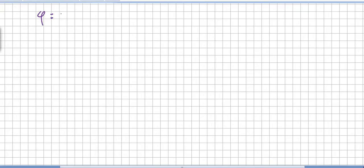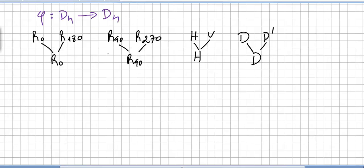To illustrate the First Isomorphism Theorem, we take a homomorphism phi from D4, the dihedral group of order 4, into itself. We define the homomorphism so that rotation 0 and rotation 180 degrees map to rotation 0; rotation 90 and rotation 270 map to rotation 90; horizontal and vertical lines map to the horizontal line; and the first and second diagonals map to the diagonal.